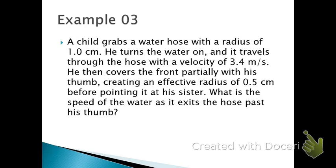Then he covers the opening a little bit with his thumb, and it creates an effective radius for the water to travel through of just 0.5 centimeters. So he's covering half of it, and then he points it at his sister. What is the speed of the water as it exits the hose past his thumb?